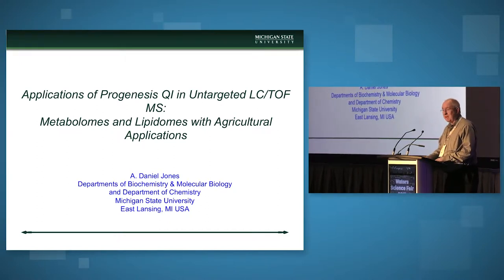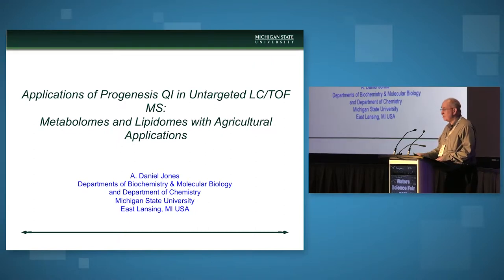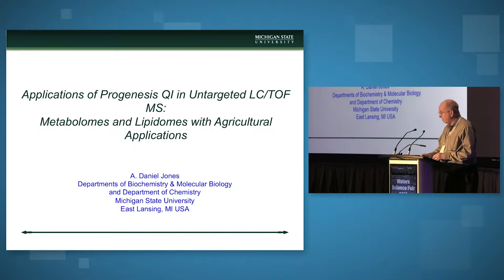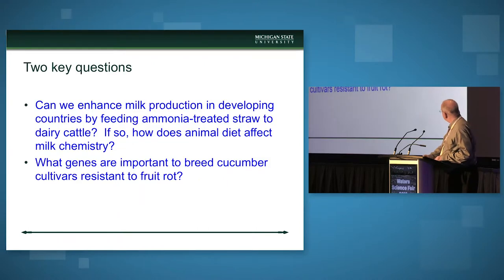Just before I get started, I'd like to put this into context. I run my own research laboratory, and I also have a service core that I'm responsible for. Both of these we use Progenesis QI to support untargeted metabolomics. I'll give you a couple of examples of things that have come through our labs in recent times.